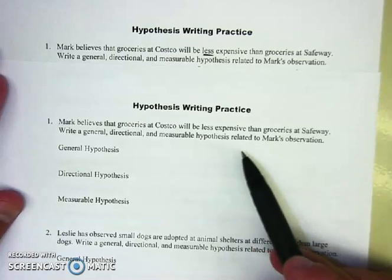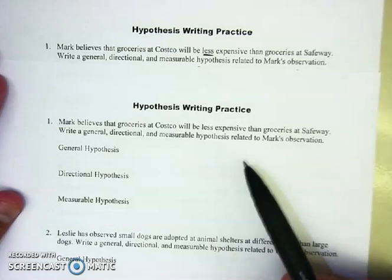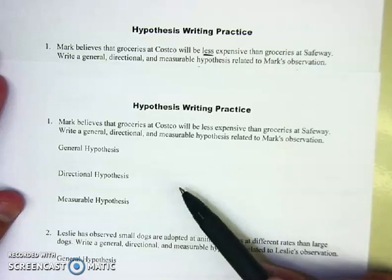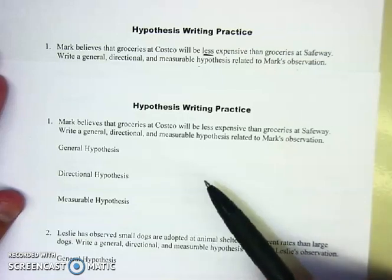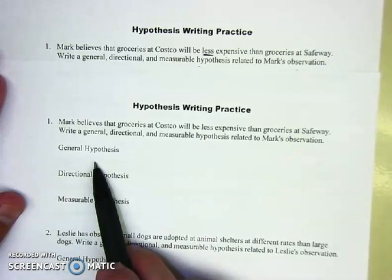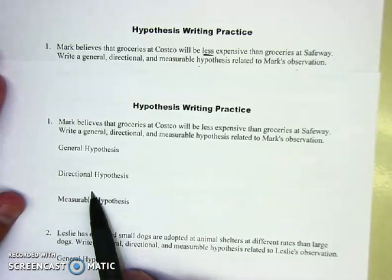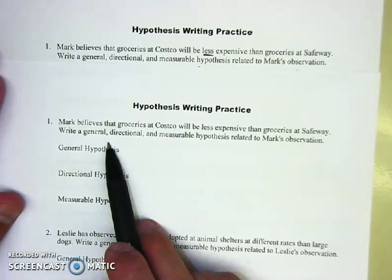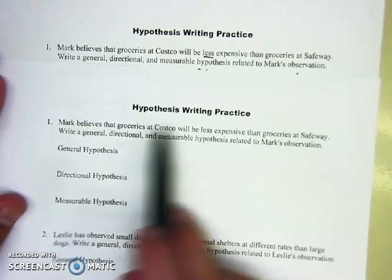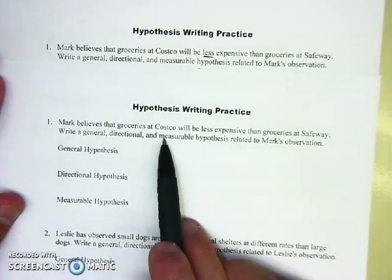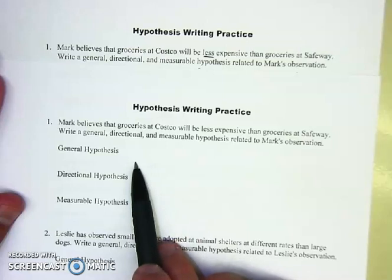There are three examples; I'm going to go through two of these. Hypothesis writing has three versions: general, directional, and measurable. Sometimes students find it easiest to start at directional, then make it more general, and then more specific to a measurable state. That's if the observations warrant that. It's usually whatever the observations are — it's one of the three — and you just have to figure out what they're telling you, then fill that one in first.